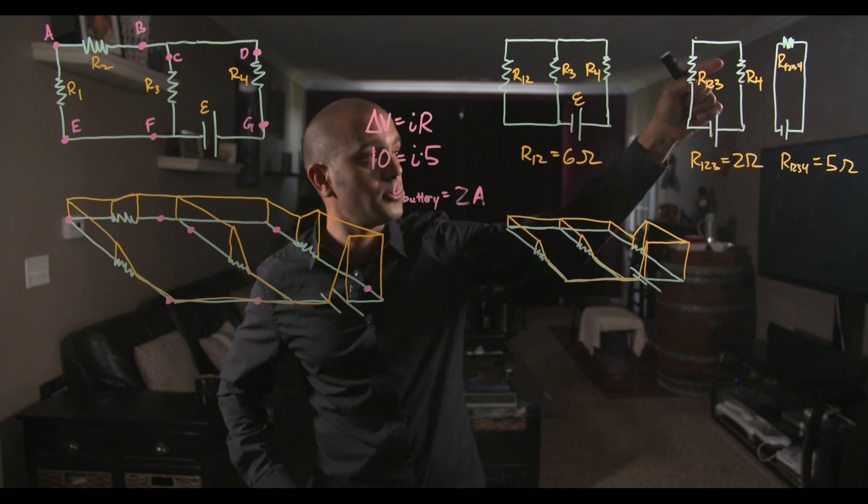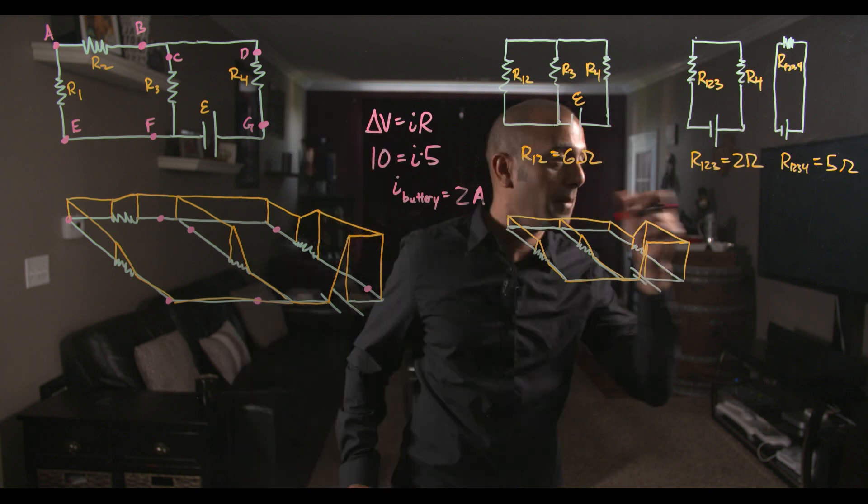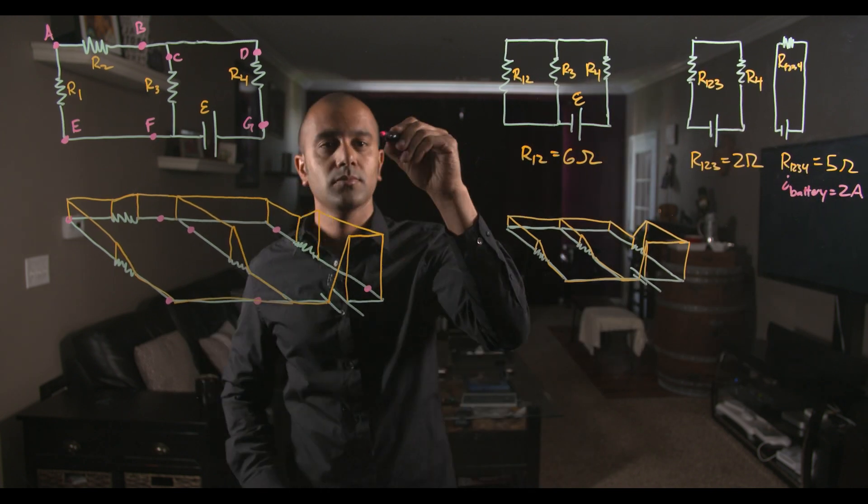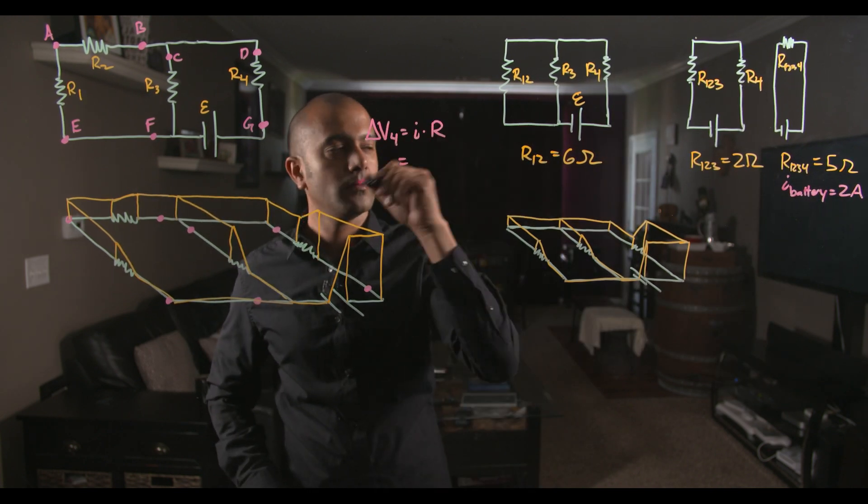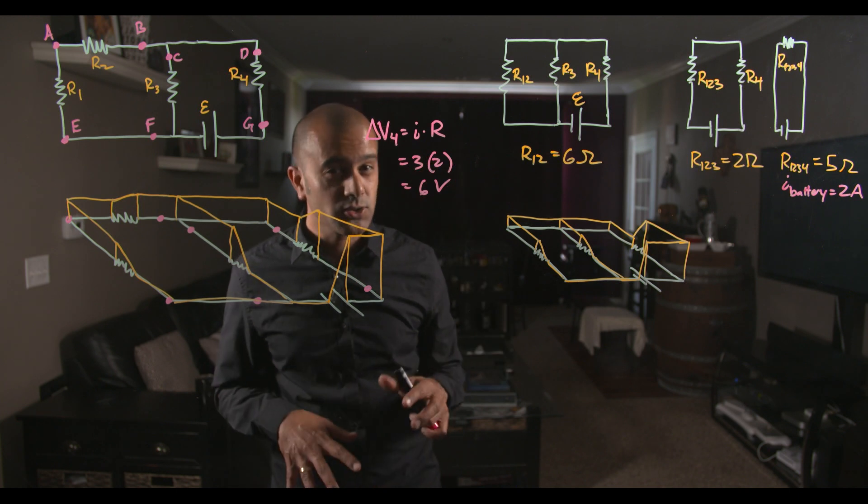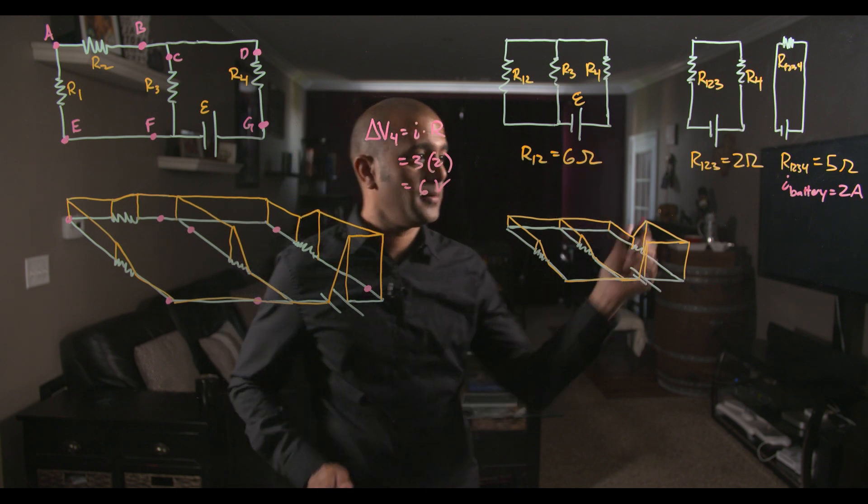So in particular, the current is 2 amps through that resistor 4, which if we use Ohm's law, we can then use to find the potential drop across that resistor. All right, so the potential drop across resistor 4 is 6 volts.